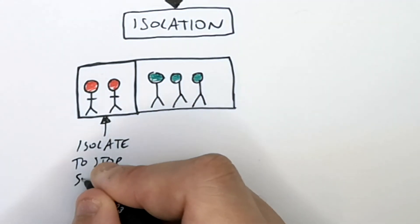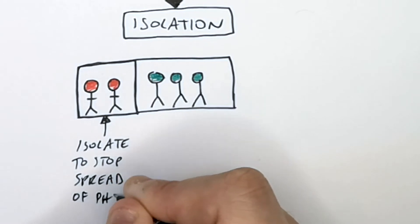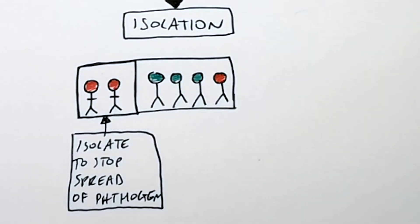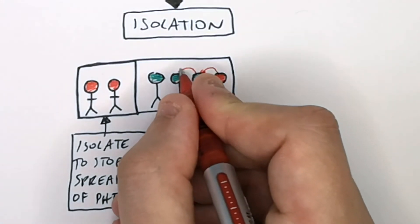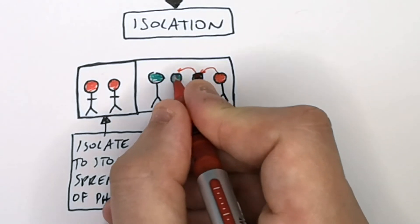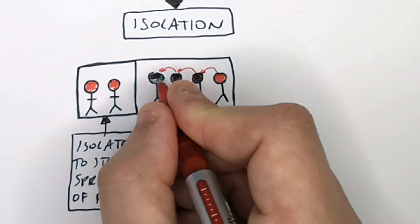So you isolate the people to stop the spread of the pathogen to healthy people. So if you don't isolate all the people with the disease, this one person can then spread that disease to healthy people.